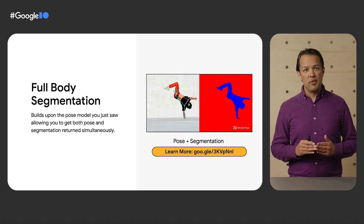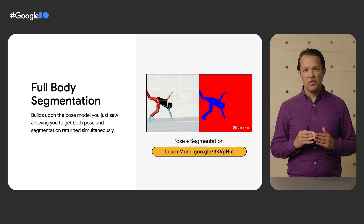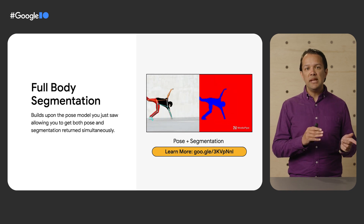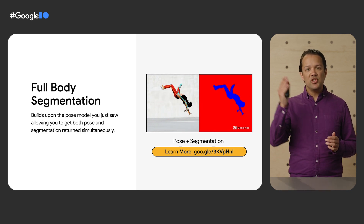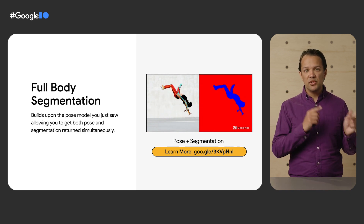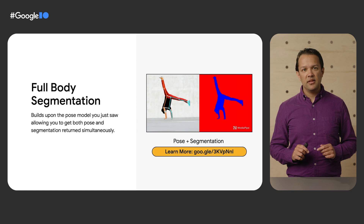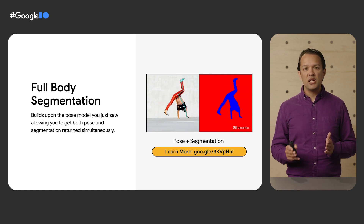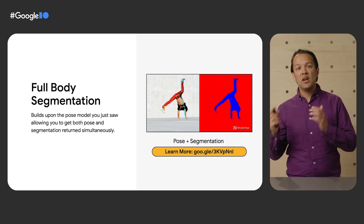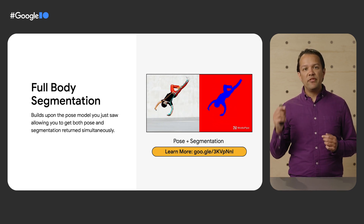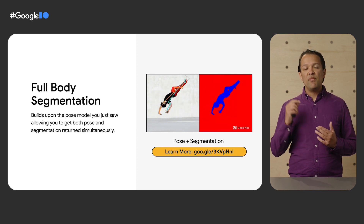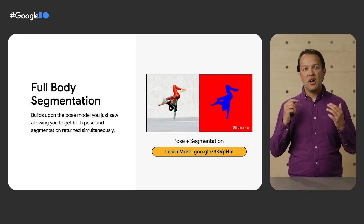Continuing our MediaPipe collaboration, we've also released a brand new body segmentation model. You can now retrieve a segmentation mask showing which pixels belong to a human body versus those that do not, as shown in the animation. As this expands upon the pose estimation model, it's able to do this with minimal additional overhead. This model is now part of our unified pose API if you need both pose and body segmentation returned at the same time. It's both faster and more accurate than our previous BodyPix model, and on a modern desktop the lighter segmentation model can run over 120 frames per second.